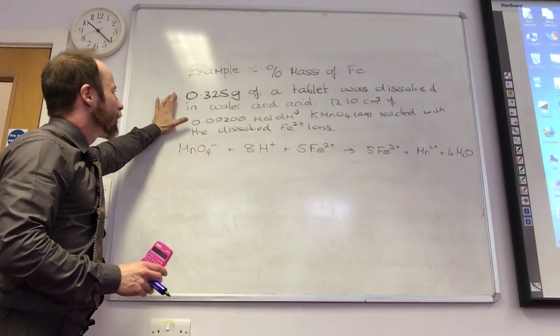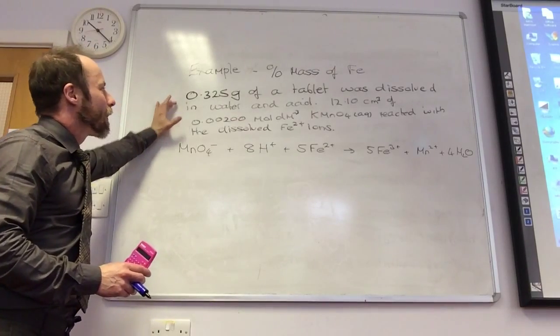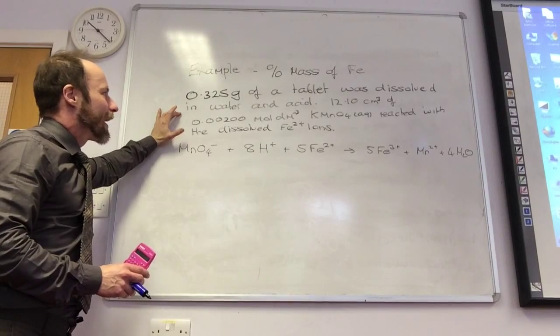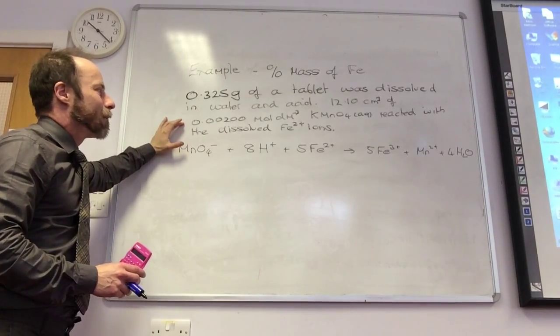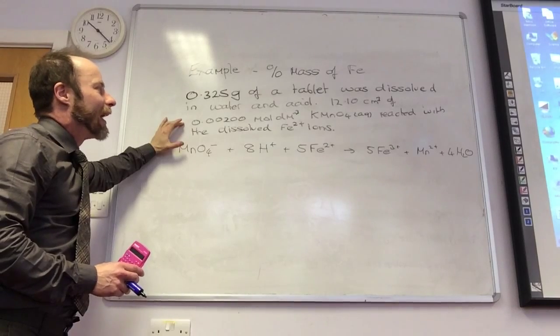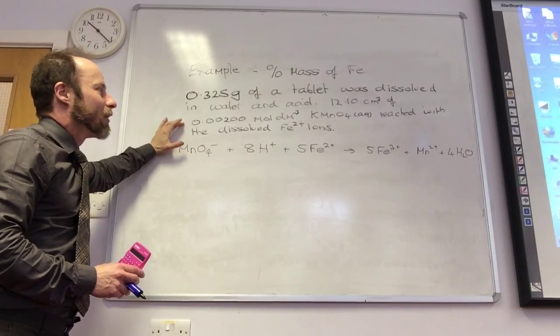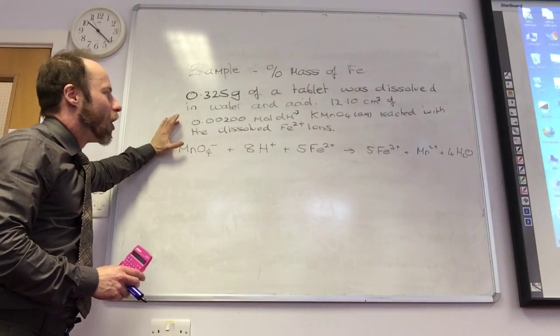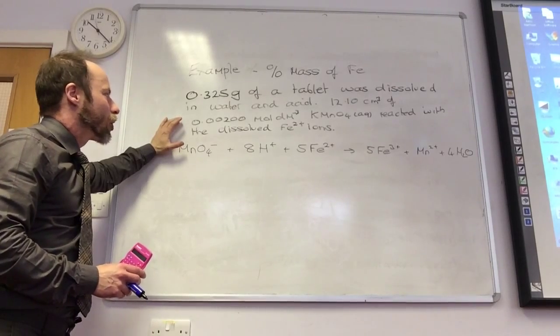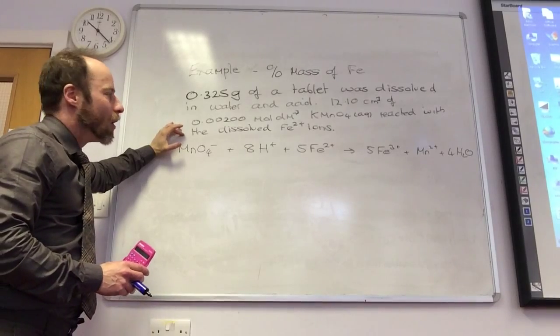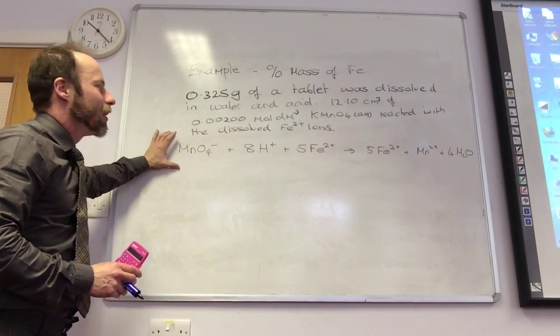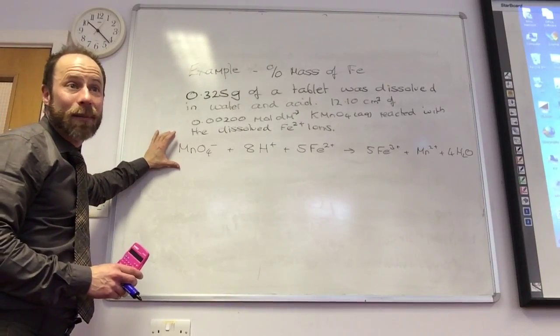We took 0.325 grams of the tablet, dissolved it into some water and some acid, and then we titrated it against potassium permanganate solution. And it took 12.10 centimeters cubed of 0.002 moles per decimeter cubed to react completely with it. We need to find out how much iron was actually in the tablet.